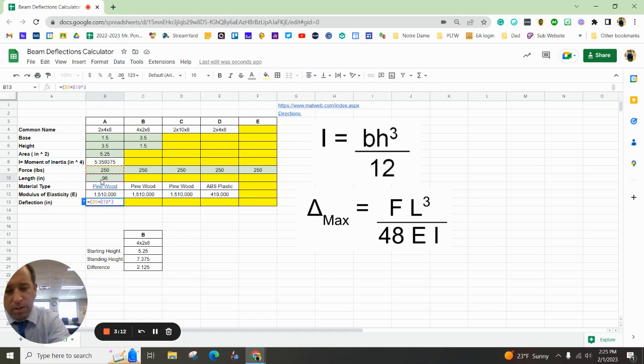So, caret 3, close parentheses, divide by 48. Oh, wait. I'm sorry. Back up. We need another parentheses. Elasticity is 48 times elasticity, which is E, times inertia here. And then close parentheses and hit enter.